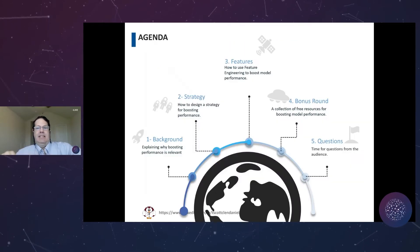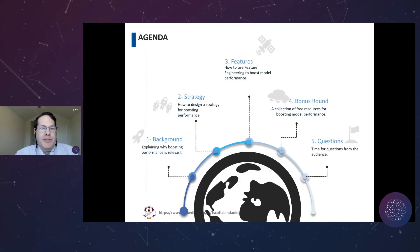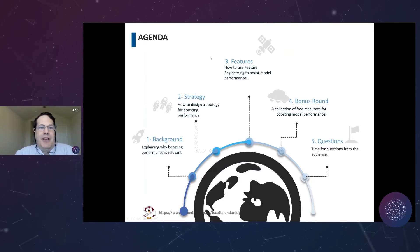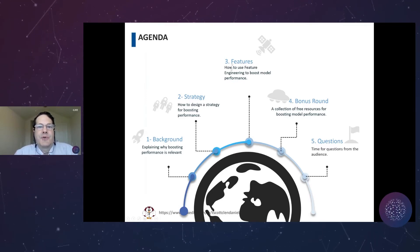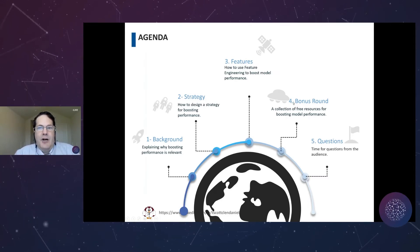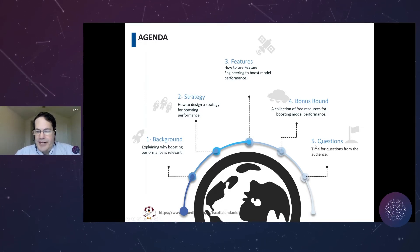Our agenda for today has five main components: one is the background on why we're talking about this; two, how to work on your modeling strategy; three, the feature engineering, which is really the heart of the session; four, a bonus round on how to combine all these components together; and fifth, I want to leave some time for questions from the audience.